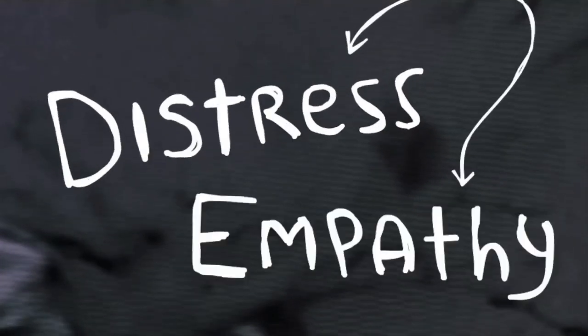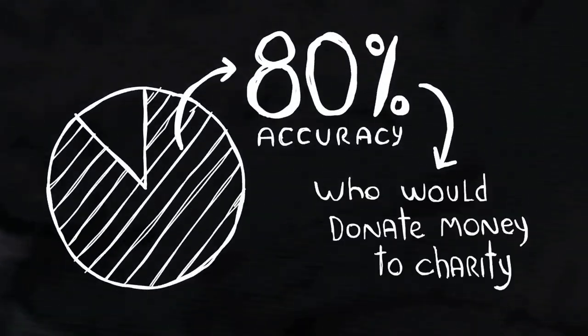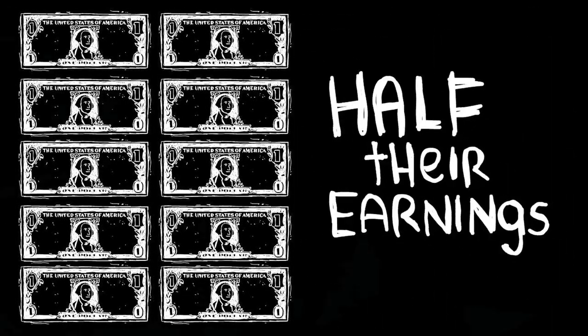And we could predict with 80% accuracy who would donate money to charity. These individuals get paid about $20 to begin the experiment, and the people who donated money, on average, donated half their earnings.